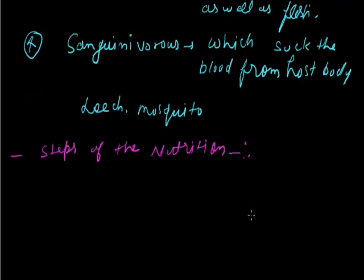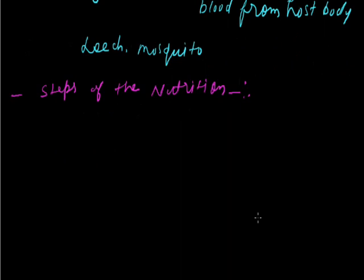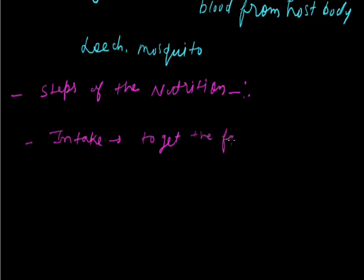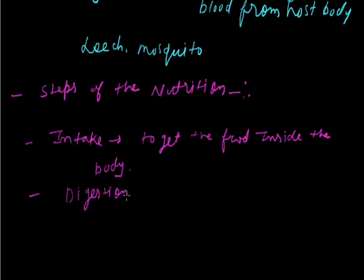Whenever we get food from a source — plant or animal — the first step of nutrition is intake: the simple process of getting food inside the body. After intake, the next very important step is digestion. In digestion, the three major nutrients — carbohydrate, protein, and fat — move inside the body and are digested by body enzymes.